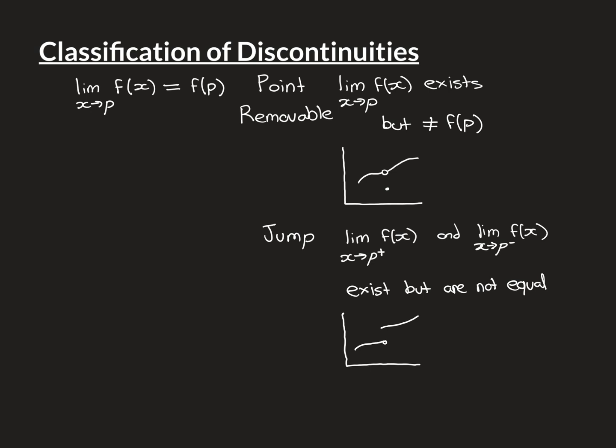The next type is called a jump discontinuity. In this case, the limit as x approaches P no longer exists. However, the second-best thing is true: both the right-hand limit and the left-hand limit exist. However, they're not equal to one another — if they were, the overall limit would exist.